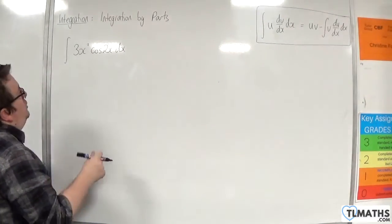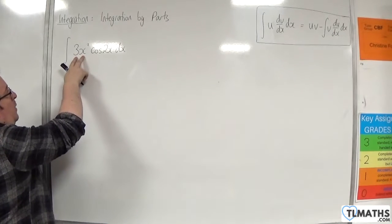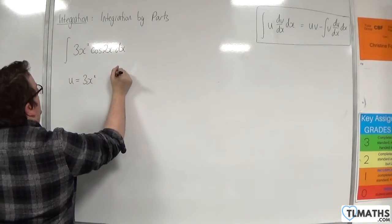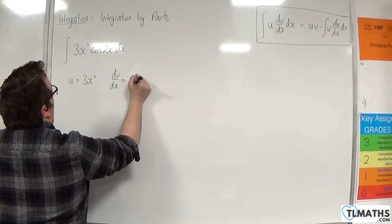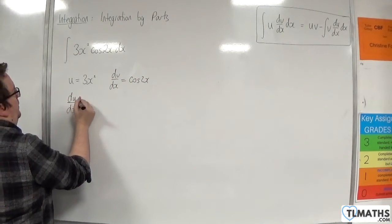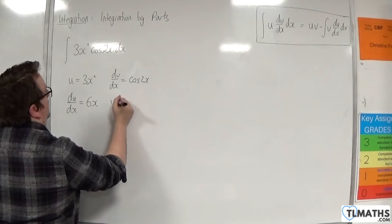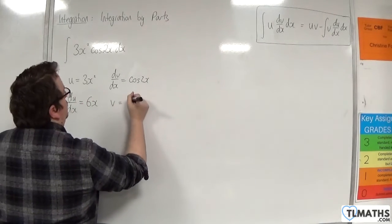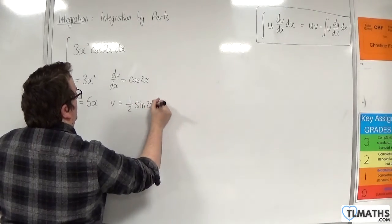So using the LATE rule we should identify that 3x squared needs to be u. So u is 3x squared and dv by dx will be cosine of 2x. So du by dx is 6x. V will be the integral of cosine 2x which will be 1 half sine 2x.